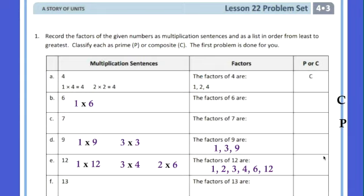We are now on page 145. It says record the factors — those are all the numbers multiplied together to get the given numbers. They give you a number and you make a list of the factors from least to greatest. Then in the last column, say whether it's prime or composite. The first one is done for us — number 4. You can get 4 by 1 times 4, but also 2 times 2. Because it has two pairs of factors, we call that composite.